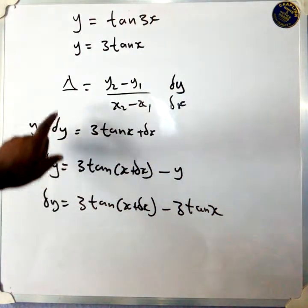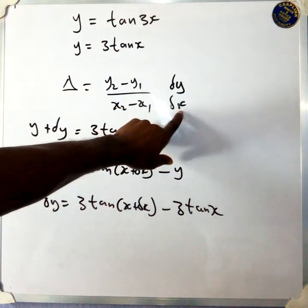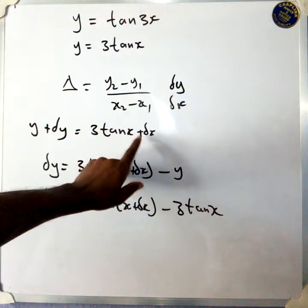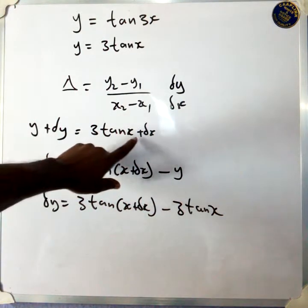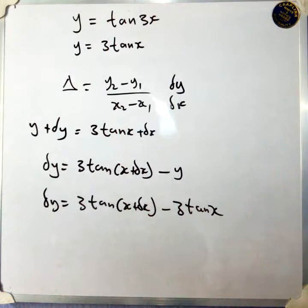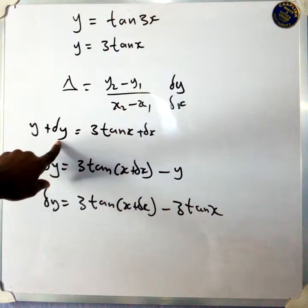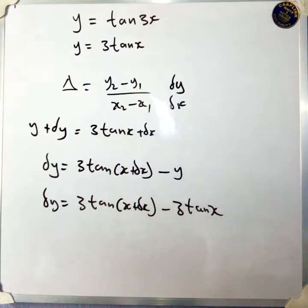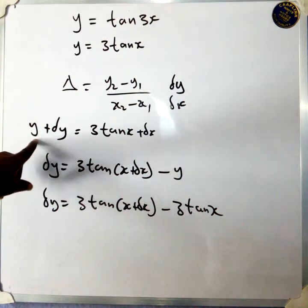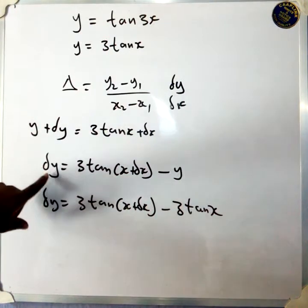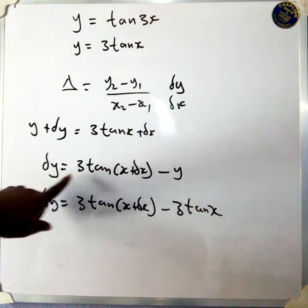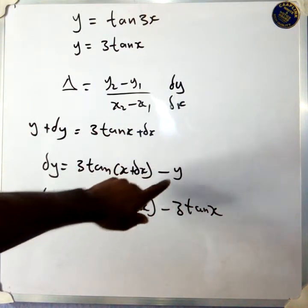We have delta y added to y, and delta x added to x. You have y plus delta y equal tan(x plus delta x). Then you make delta y the subject of the formula by taking y off this side. Delta y would be tan(x plus delta x) minus y.